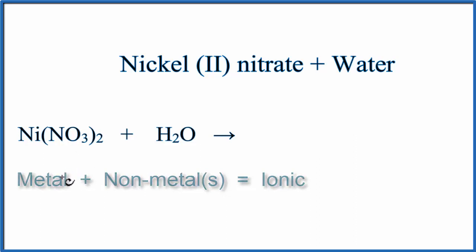Because it's ionic, we need to think about the charges. Nickel, because of this 2 here, the Roman numeral, tells us it has a 2+ charge. So we can put a 2+ above the nickel.